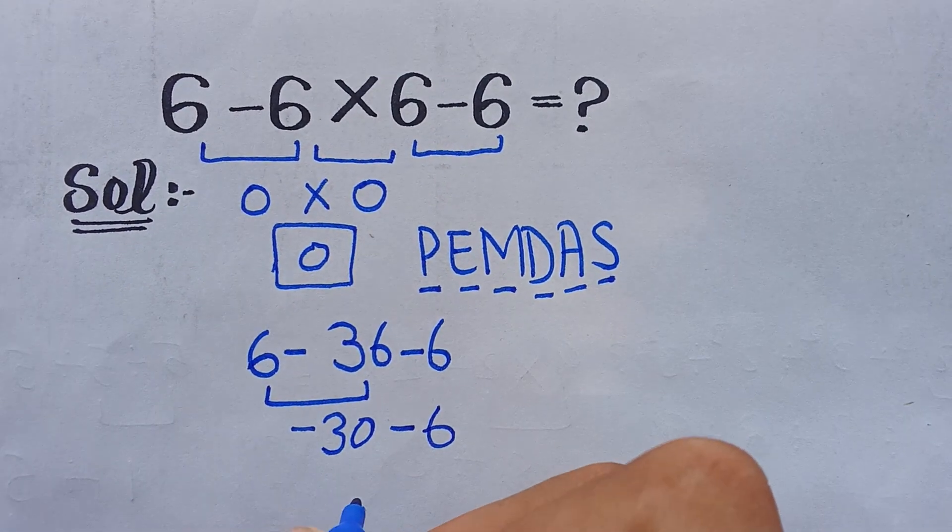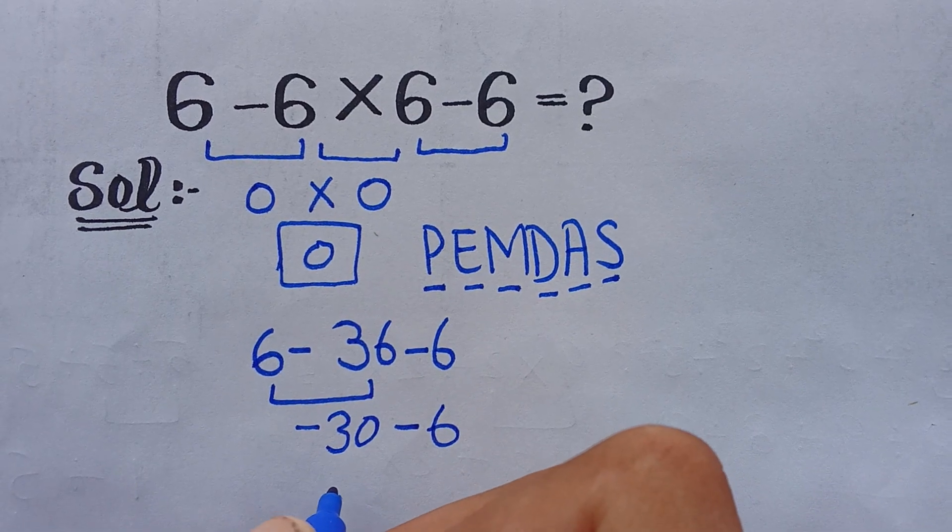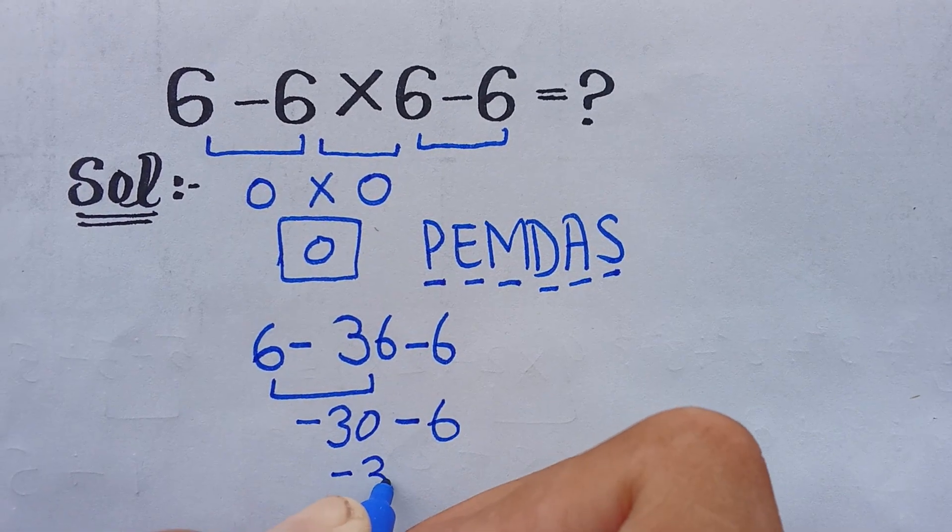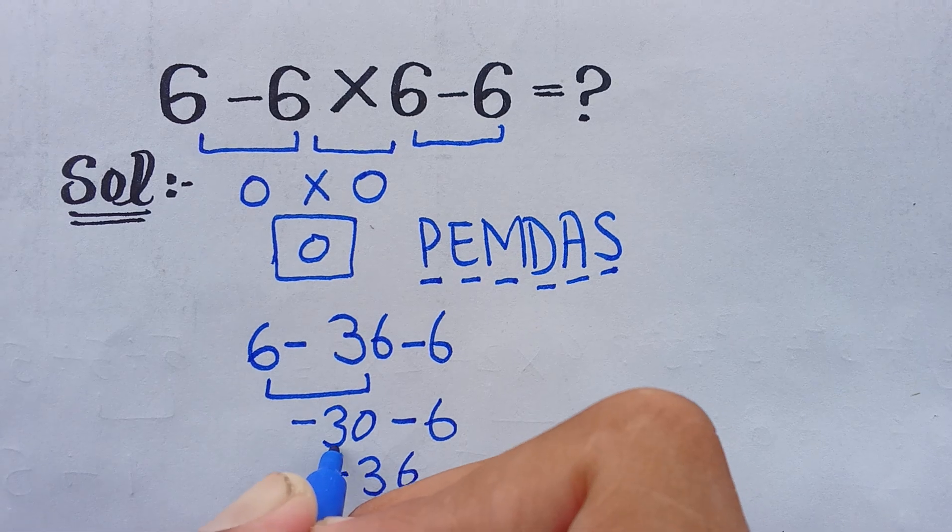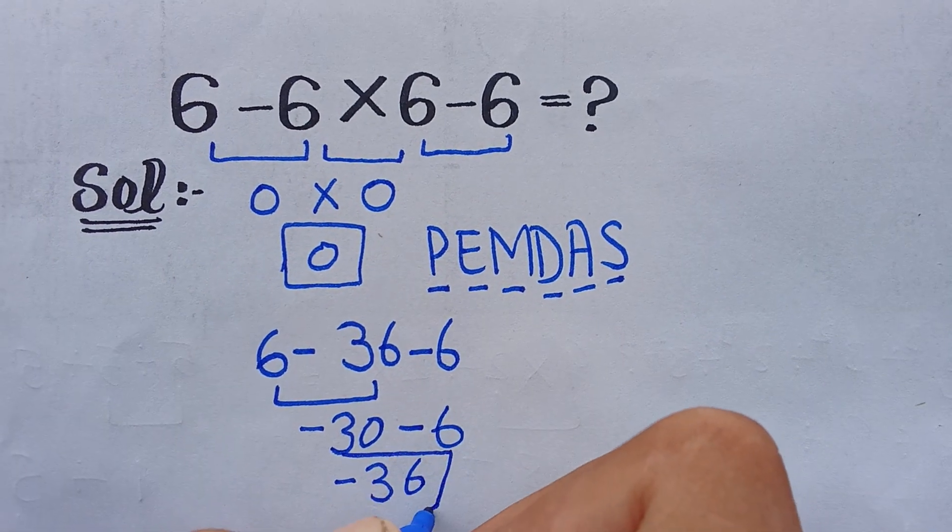So 6 minus 36 minus 6 is equal to minus 36. This is our final answer of this equation.